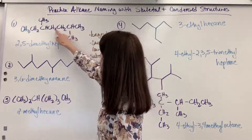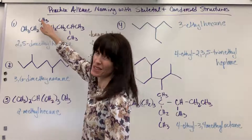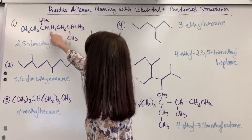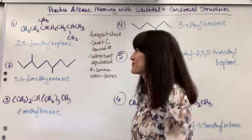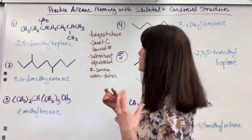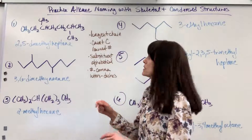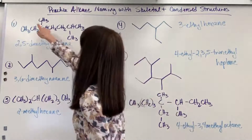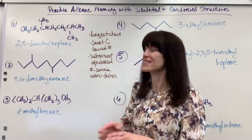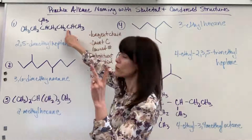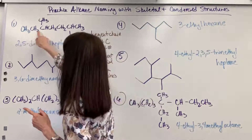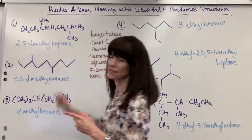Notice I could go one, two, three, four, five — can't stop there — six, seven, eight. Let me redo that: one, two, three, four, five, six, seven. So my longest chain is seven and we have two substituents.